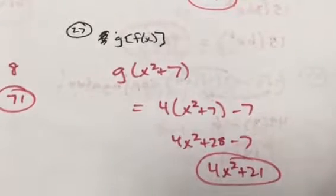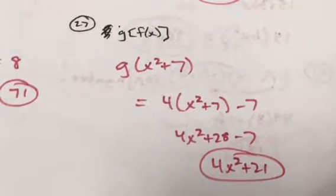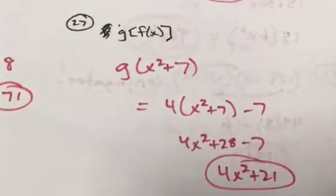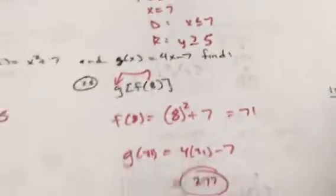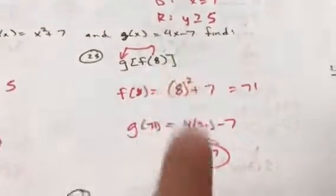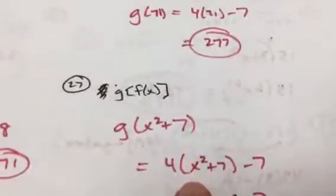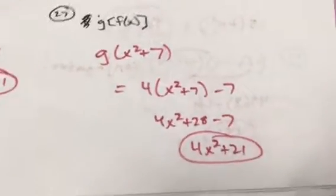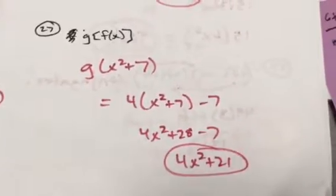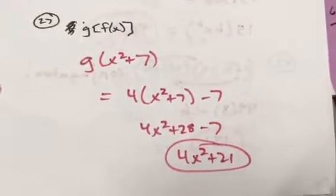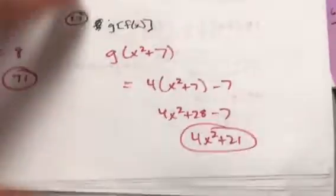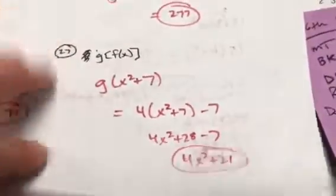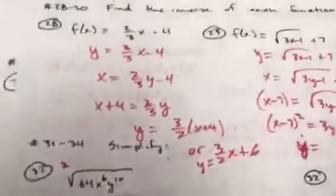For number 27, f of x is just a function, so it's going to be g(x² + 7) — wherever you see x in the g equation, you plug in that entire expression. Anytime you have g of f(x) or f of g(x), you'll get an answer that involves x, not just a single number.